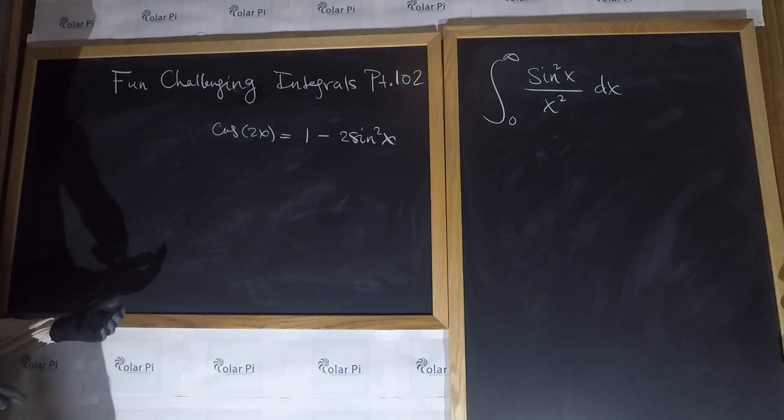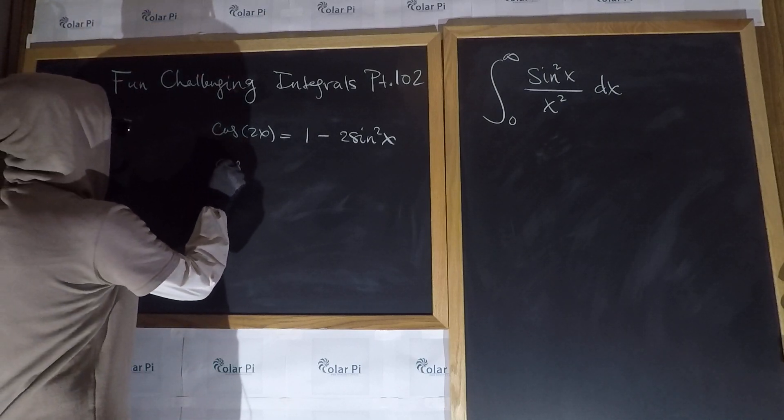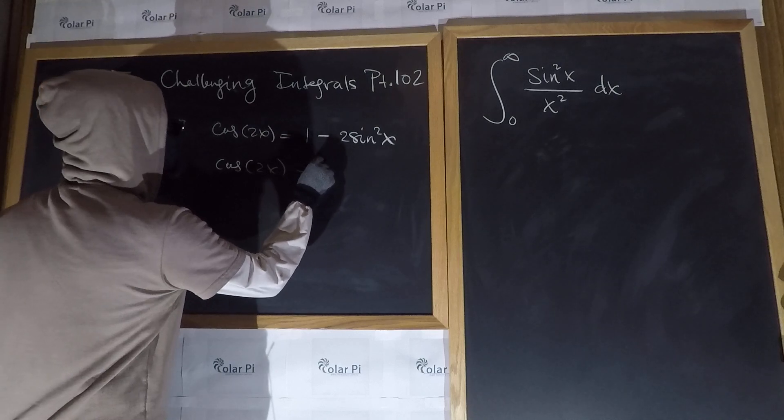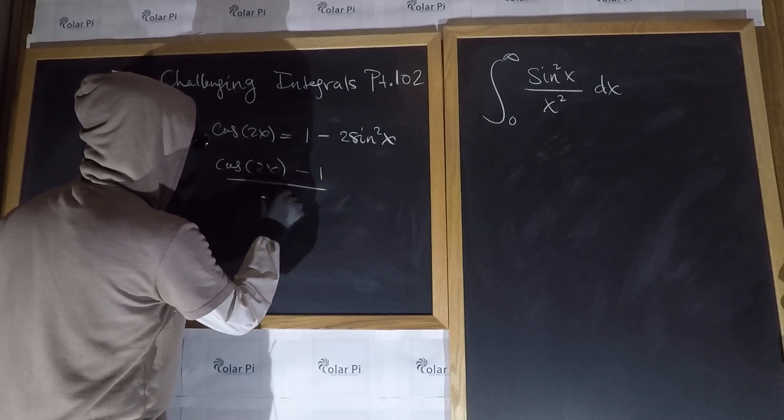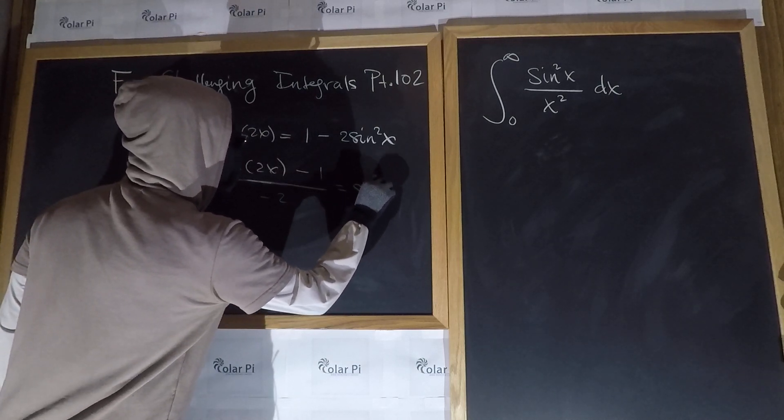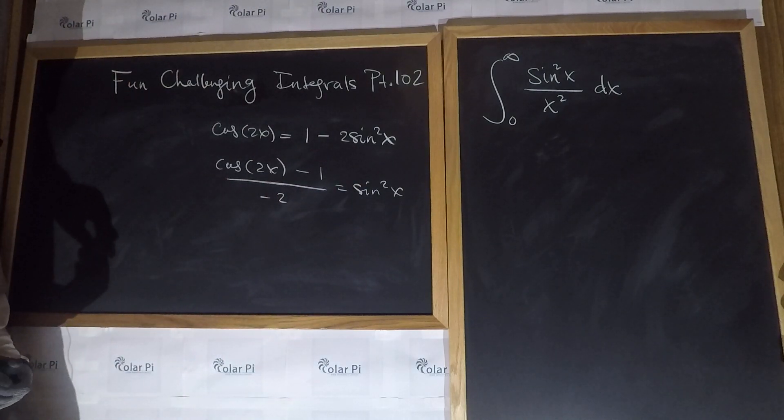Okay, so then, manipulating this equation, we can write that cosine 2x minus 1 divided by negative 2 is equal to sine squared x. Like that, right? Okay,